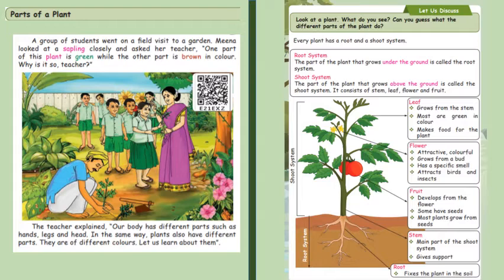Every plant has a root and a shoot system. The part of the plant that grows under the ground is called the root system, and shoot system is the part of the plant that grows above the ground. The shoot system has stem, leaf, flower and fruit.